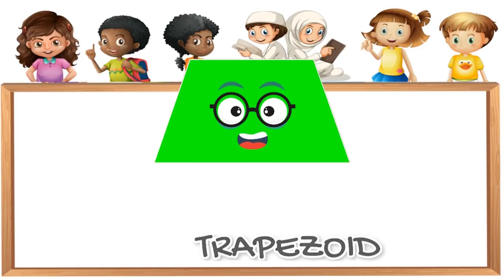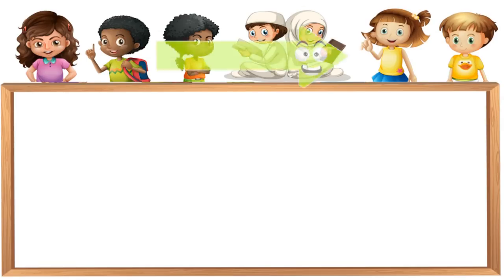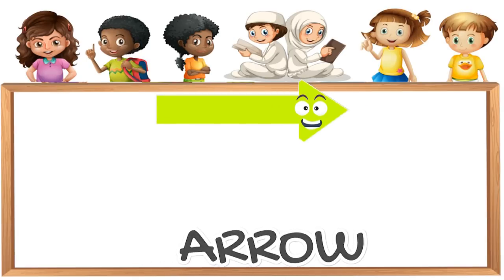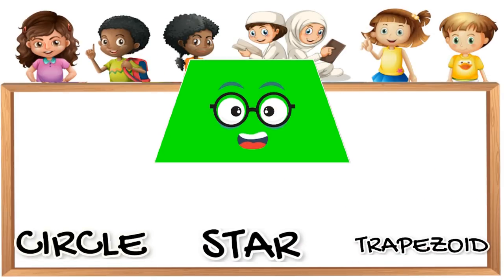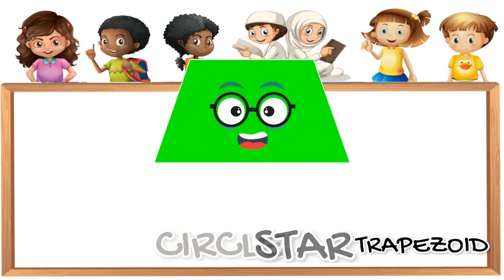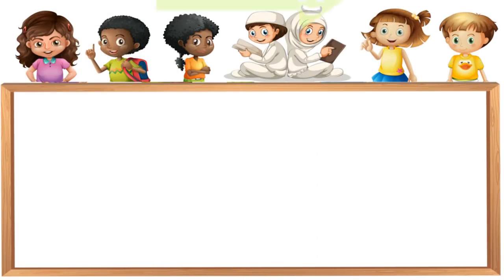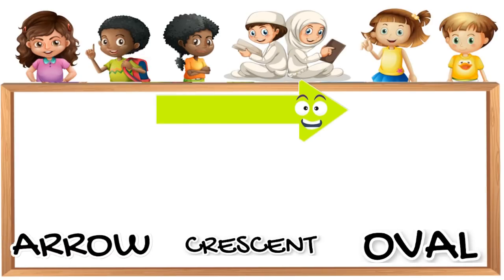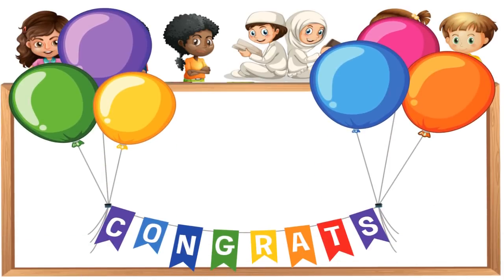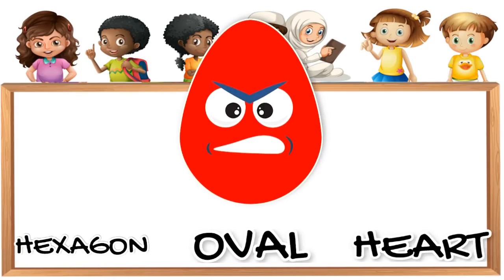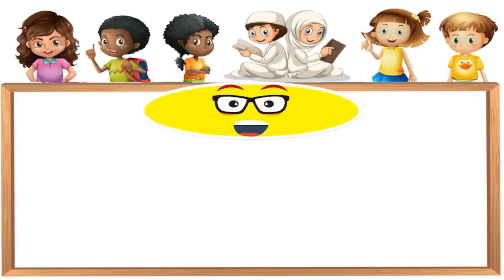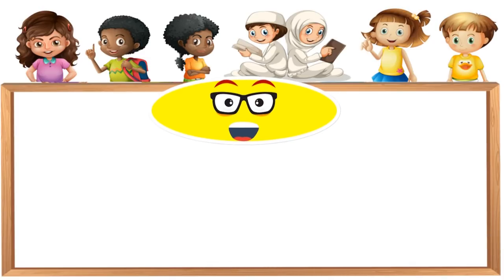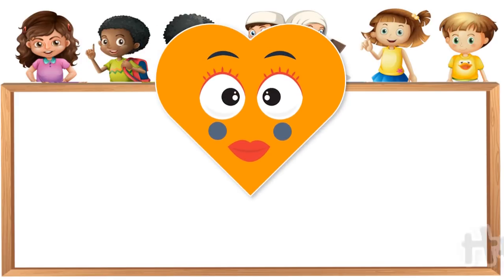Kite. Trapezoid. What shape is it? Kite. Correct! What shape is it? Oval. Excellent! Kite. Heart.